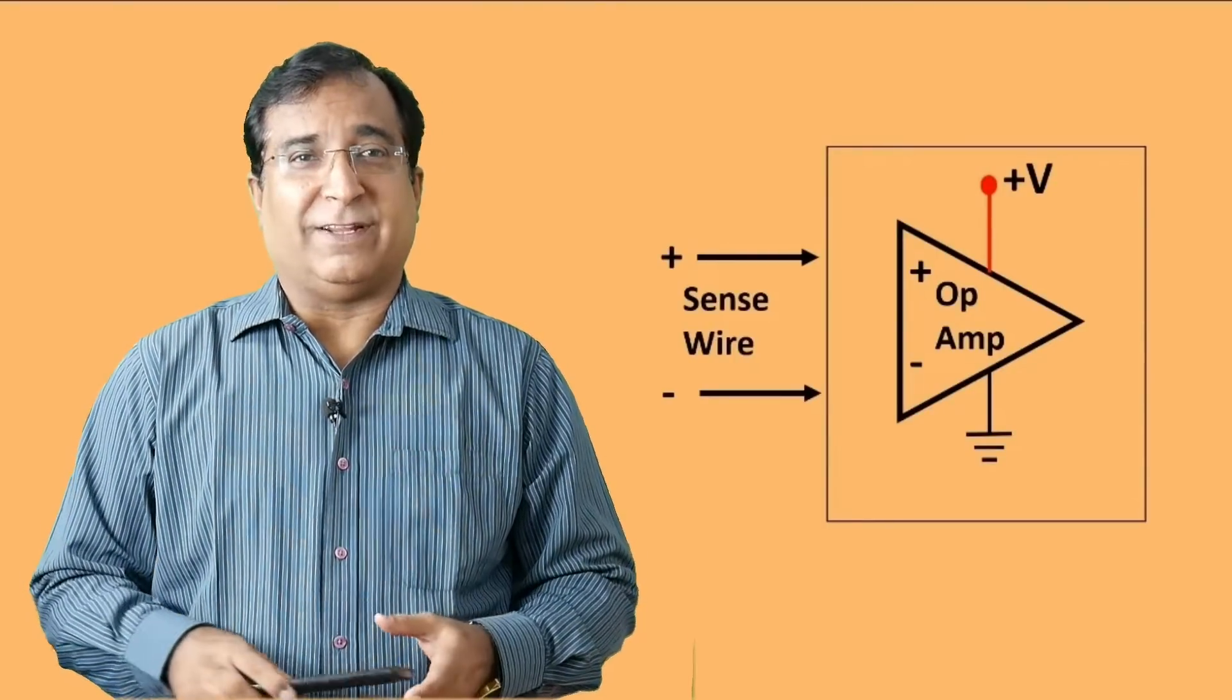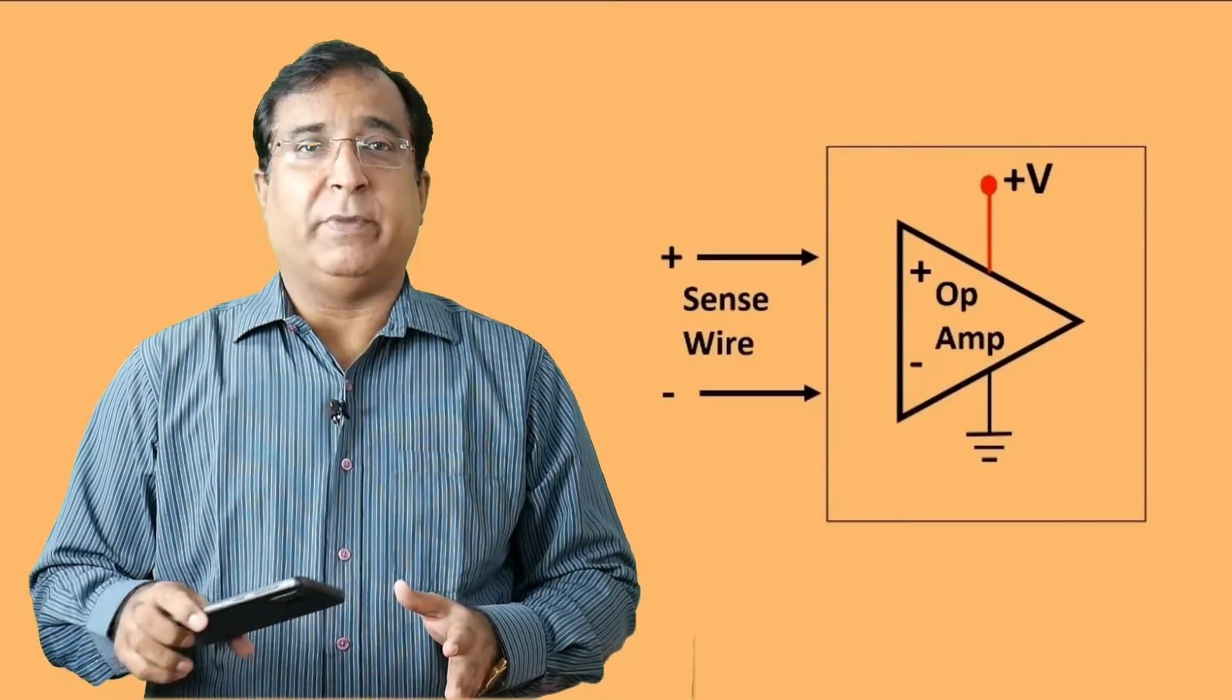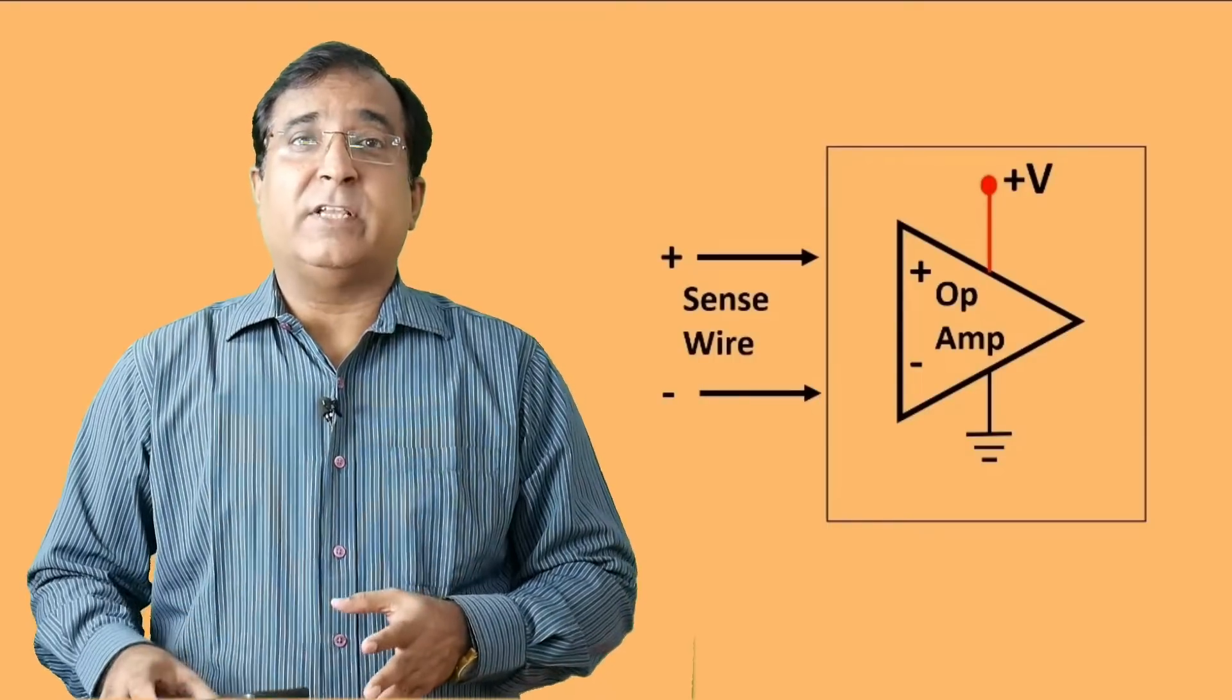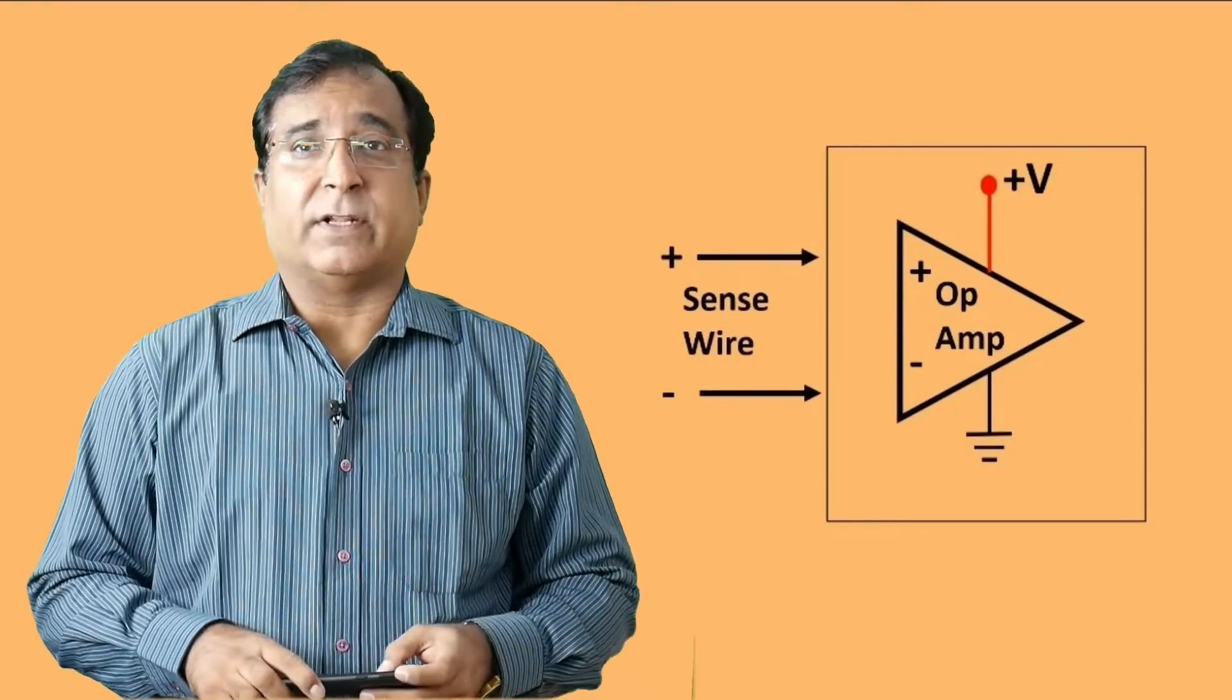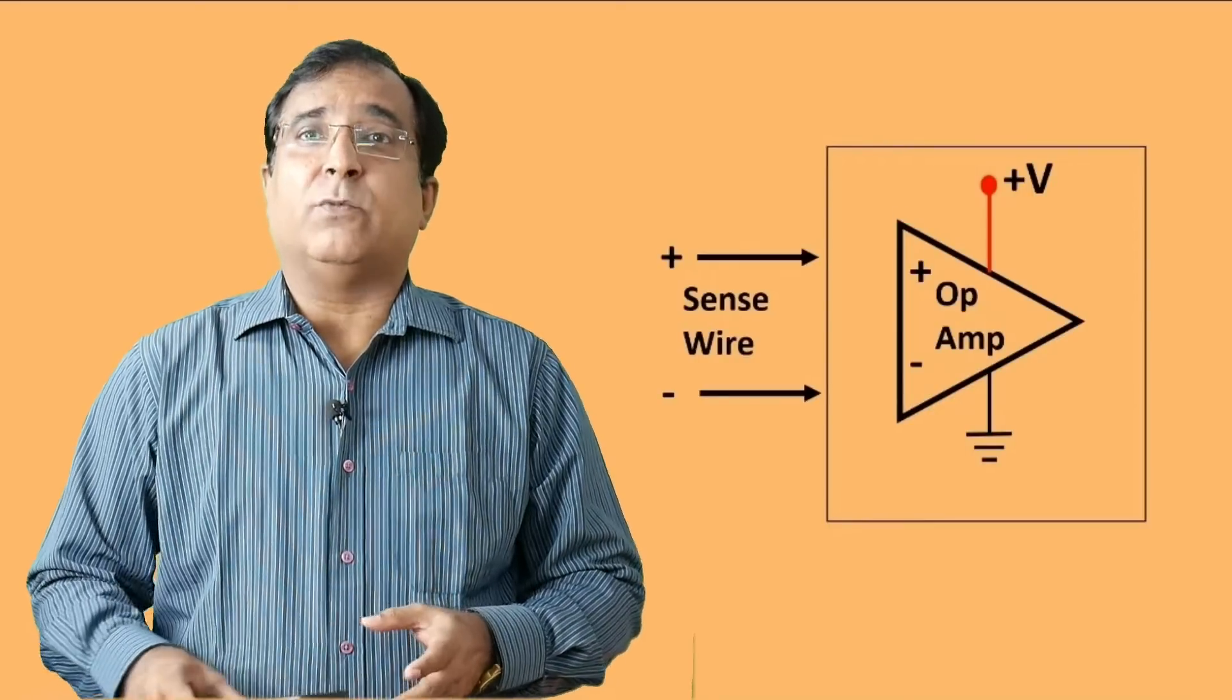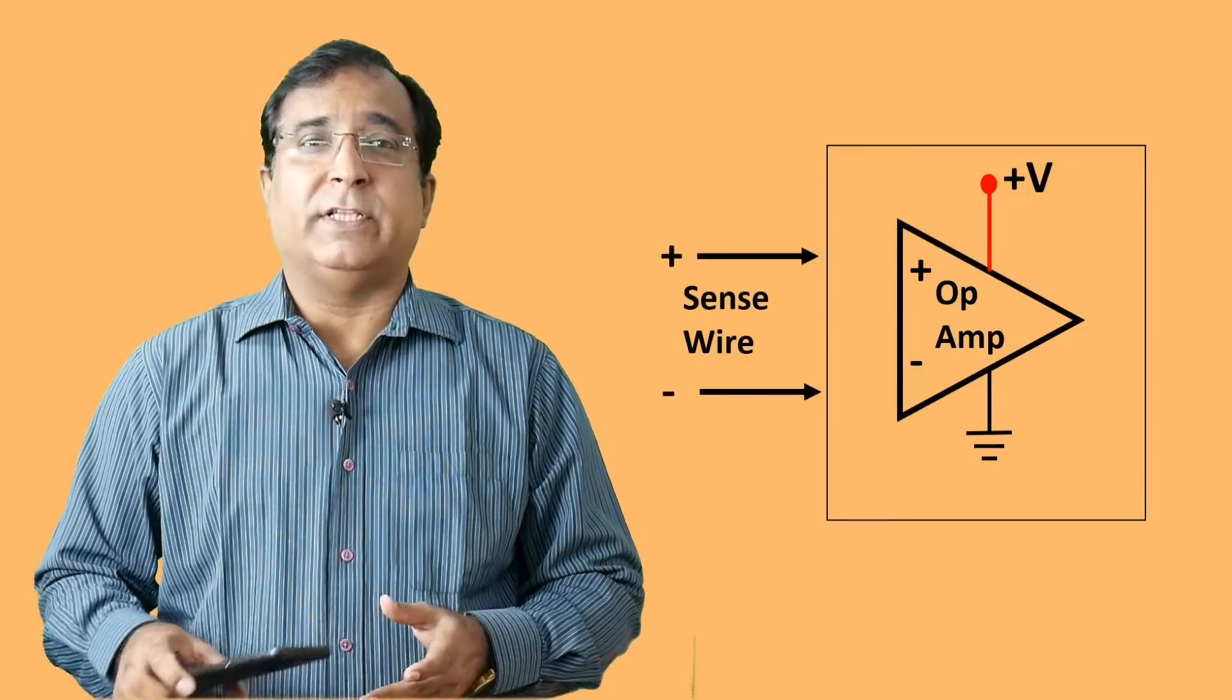No, there will be no voltage drop in these 2 extra wires because both these wires are connected on a high input impedance operational amplifier measurement circuit. The input of this operational amplifier consists of high impedance MOSFET which draw almost negligible current from the source. Therefore there will be no drop in this sense wire according to Ohm's law.